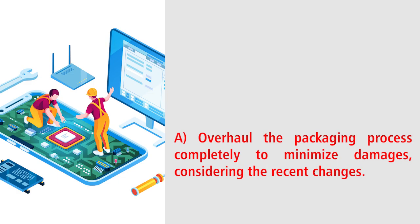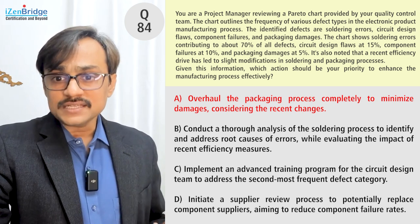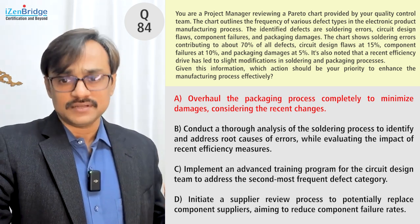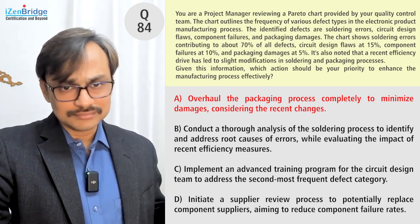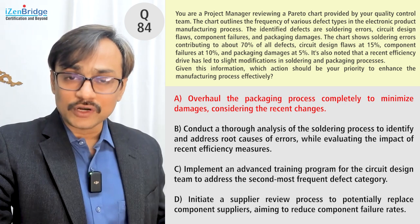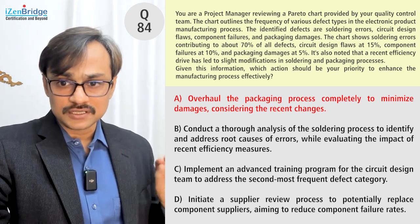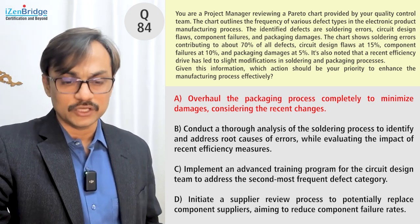Option A says: overhaul the packaging process completely to minimize damage, considering the recent changes. But packaging is only 5 percent of defects. It's good, but why should I work on something that accounts for only 5 percent? I can definitely ignore that option.